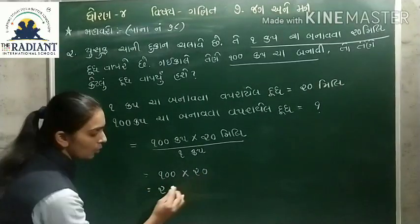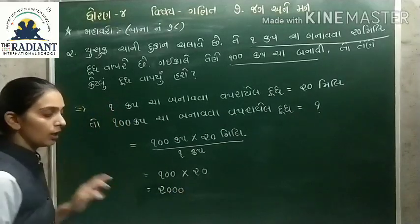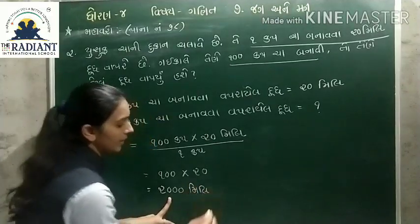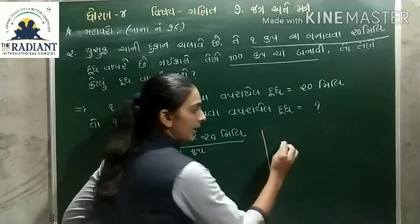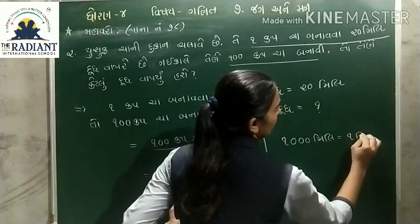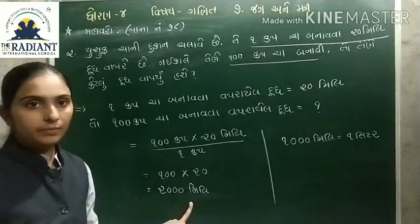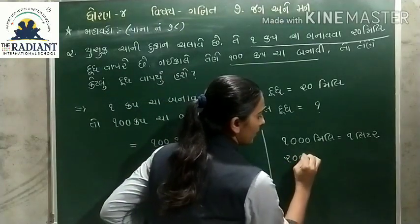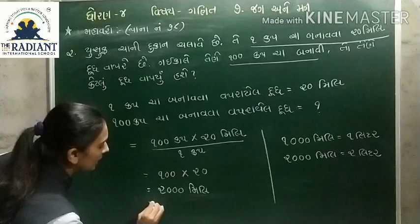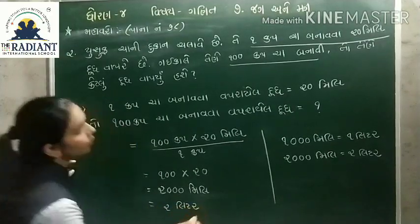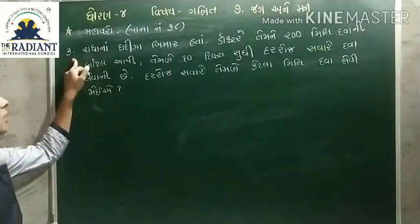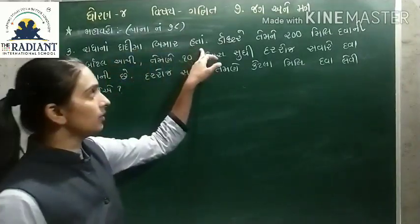100 કપ × 20 મિલી / 1 કપ = 2000 મિલી. 2000 મિલી એટલે 2 લિટર. તો 100 કપ ચા બનાવવામાં 2 લિટર દૂધ વપરાયું.